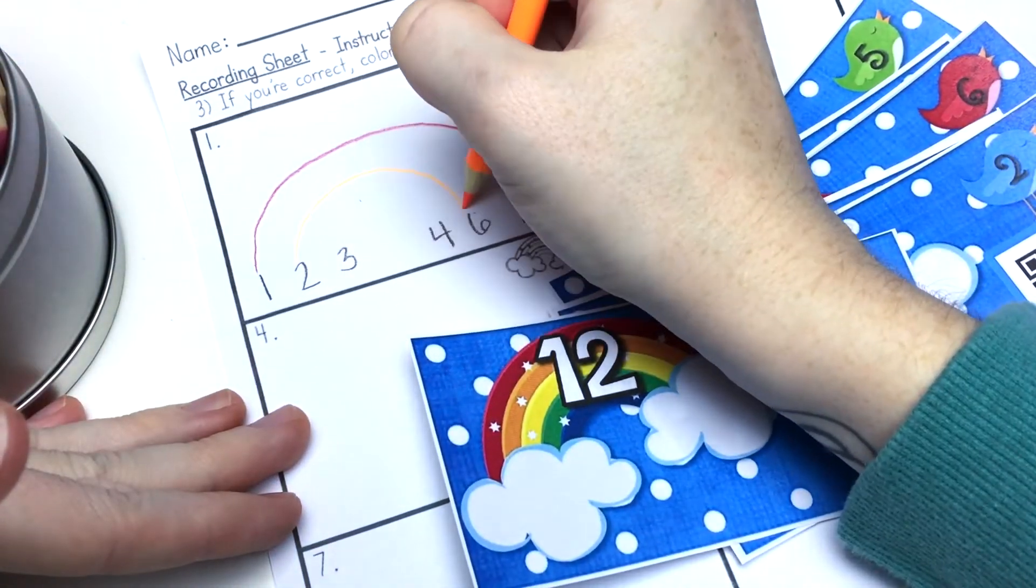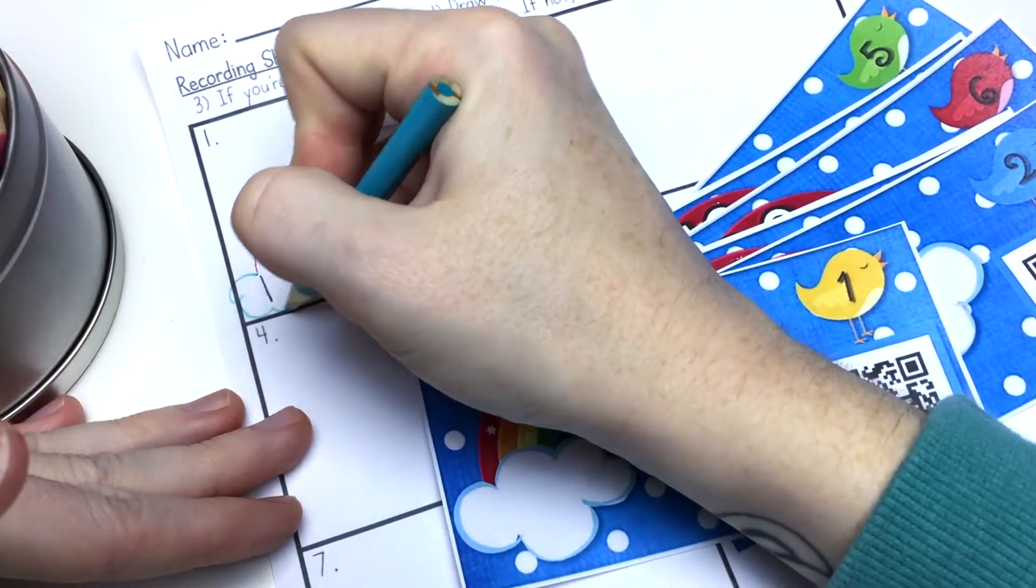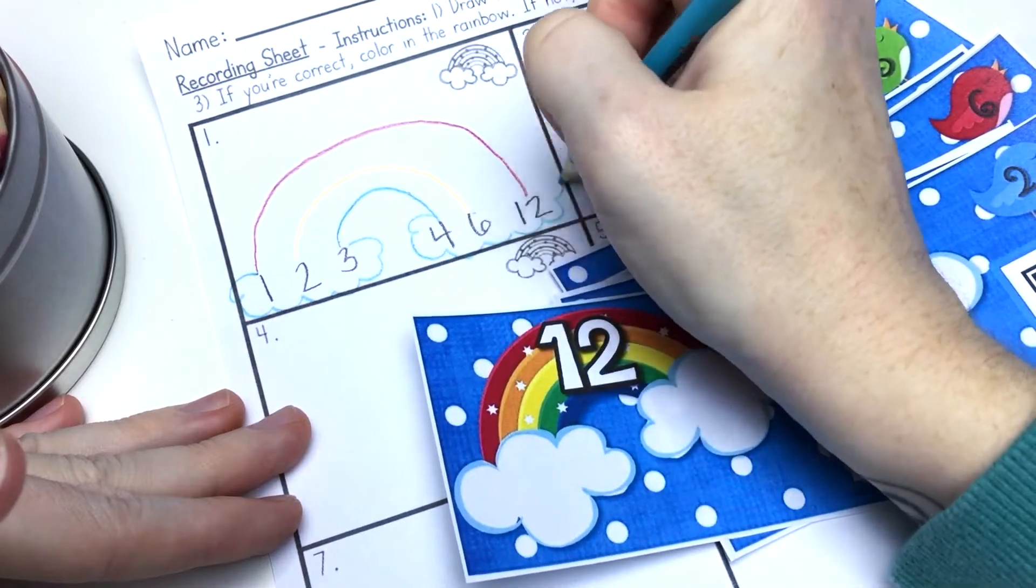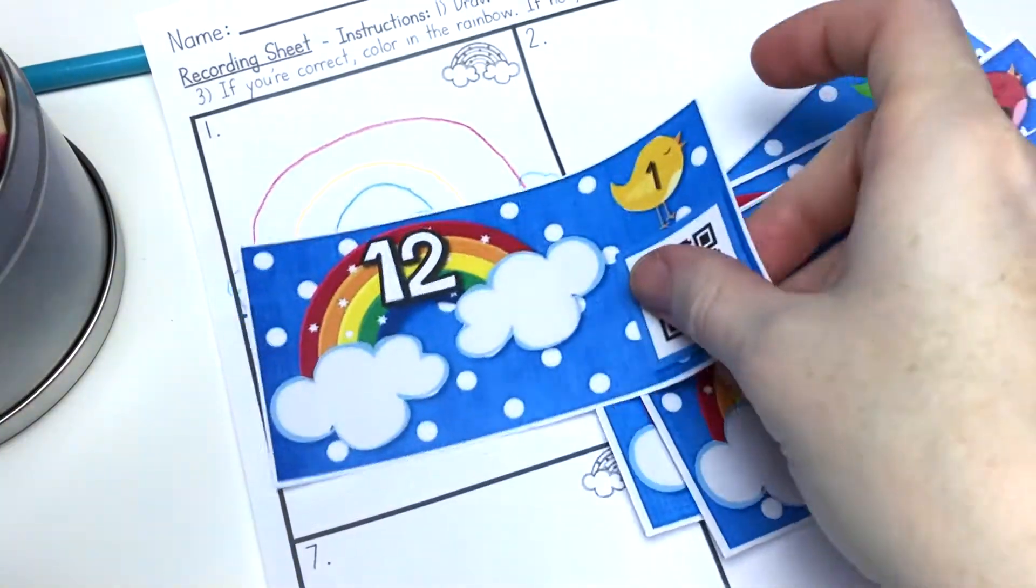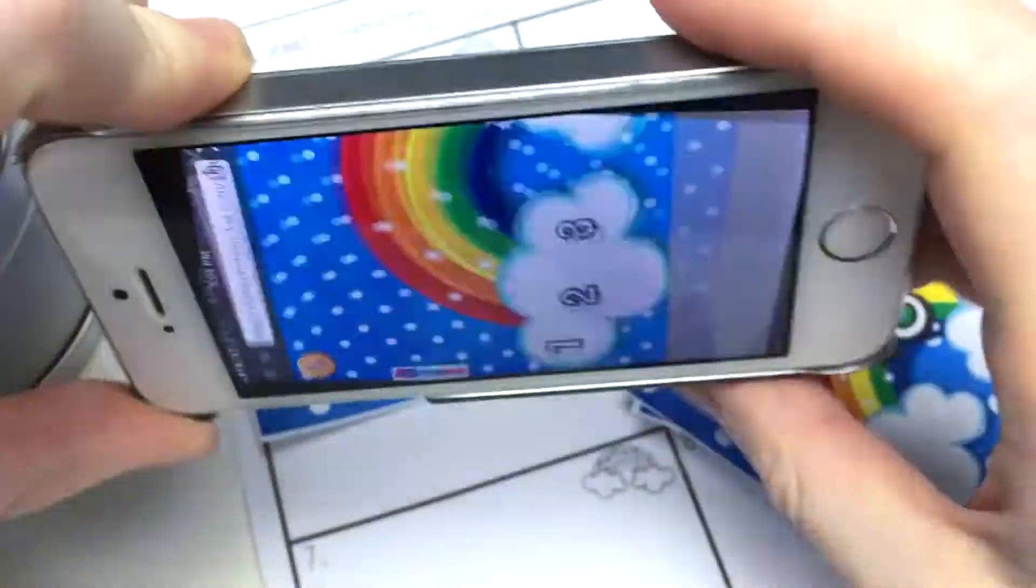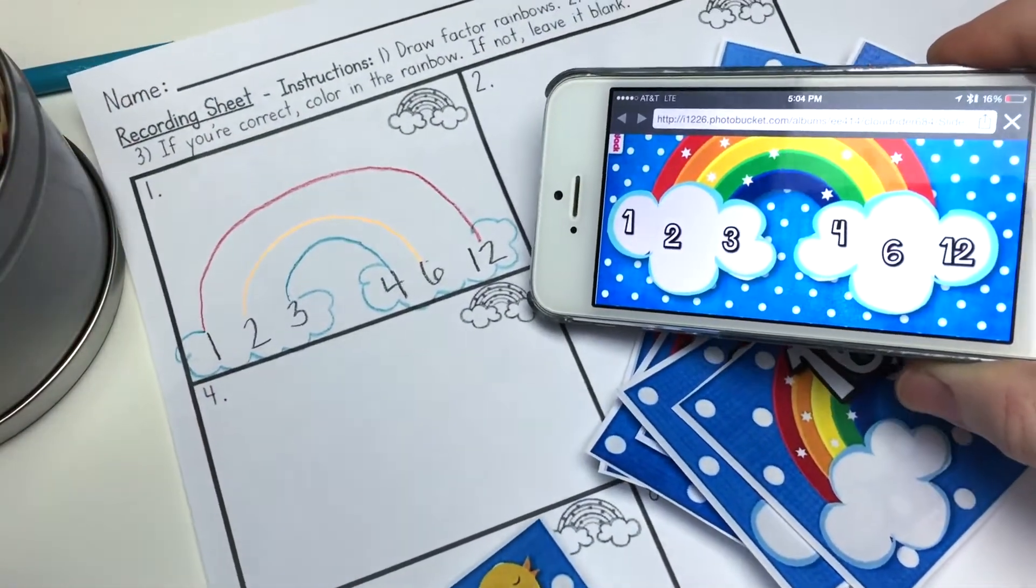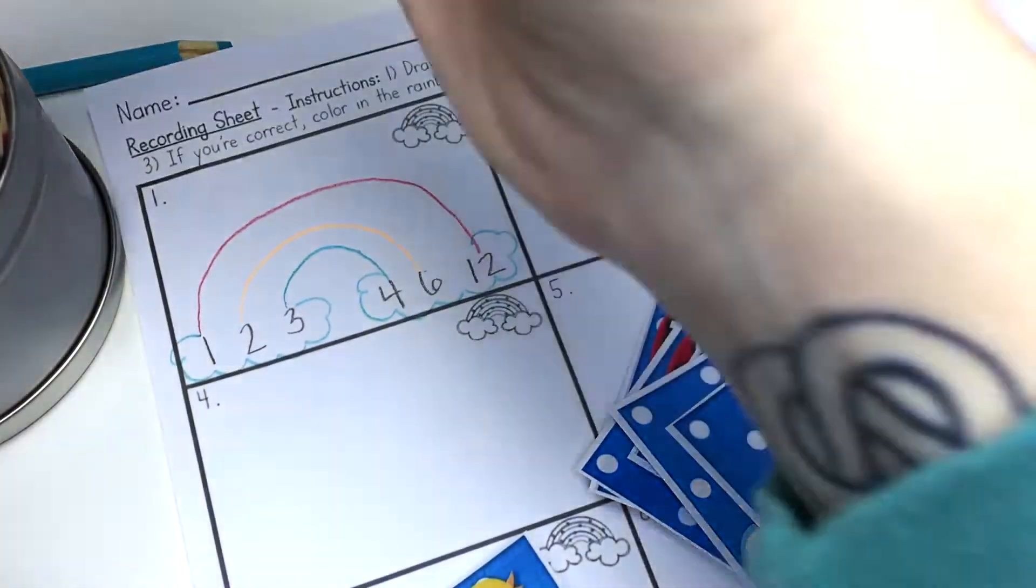Students use a recording sheet to create their factor rainbows, then scan the QR code to check their answer. With these codes, you need internet access on the device, so that's very important.